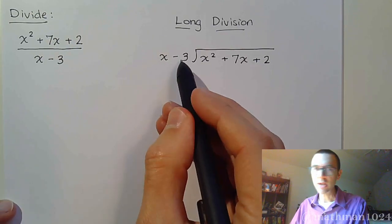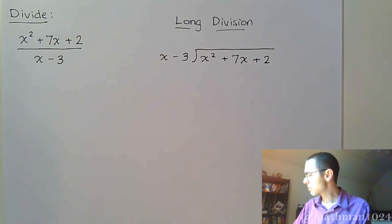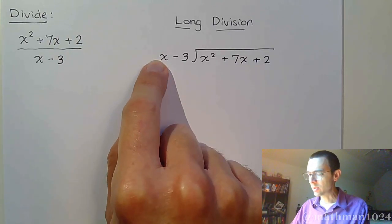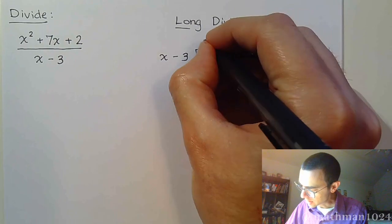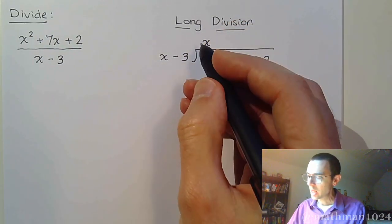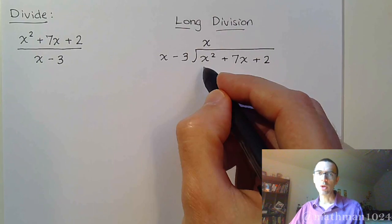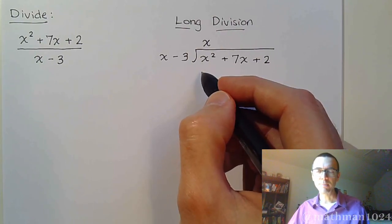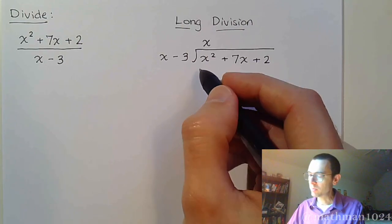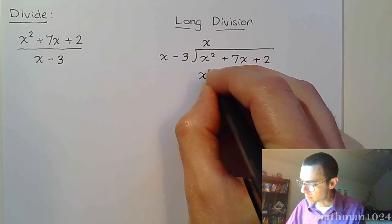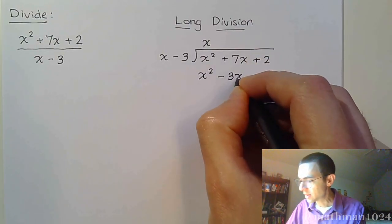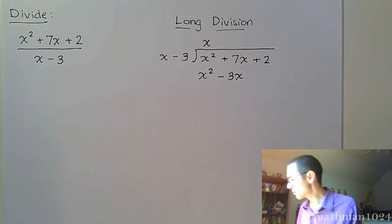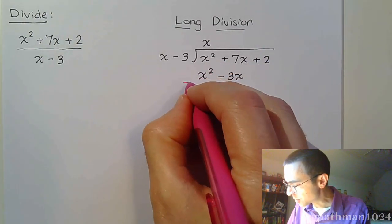We focus on the x right here and the minus 3 just comes along for the ride. We're trying to figure out what we would multiply x times to get x squared, because you're going to start getting rid of things. So x times x gives you x squared. With long division, once you multiply you end up subtracting. So x times x gives me x squared, but don't forget about the minus 3, so x times negative 3 is negative 3x.